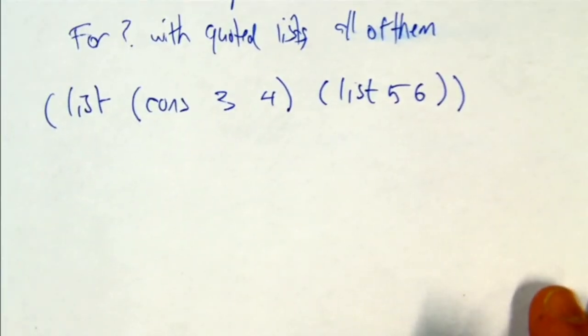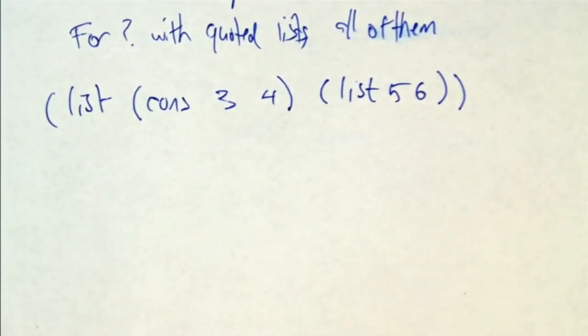OK, so we want to turn that into a box and pointer diagram. So here's how I think about it. At the top level, it's a list of two things. So let's draw that.